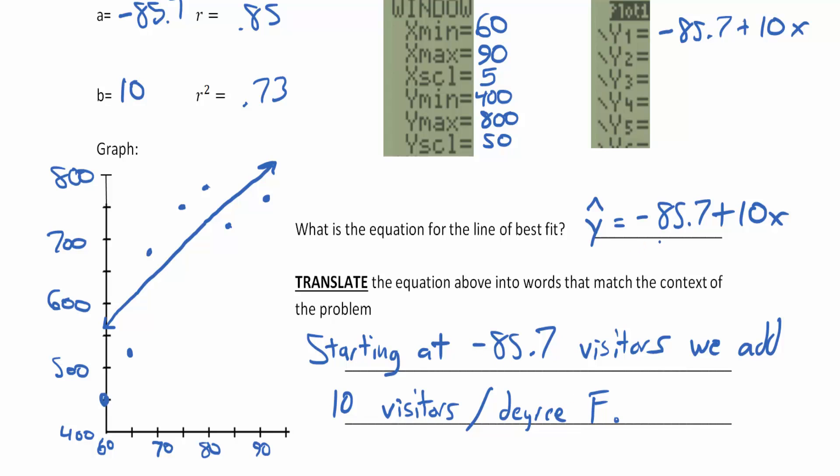That is the translation. Starting at negative 85.7 visitors we add 10 visitors for every degree of Fahrenheit. This is our translation of the equation. Now you might say you can't have negative 85.7 visitors. Yeah, but that would be at zero degrees, which also would be just as silly.